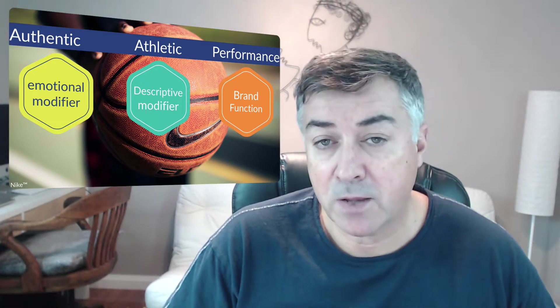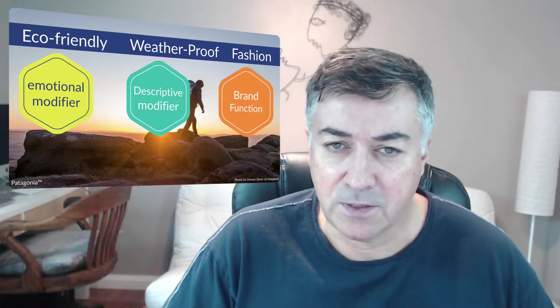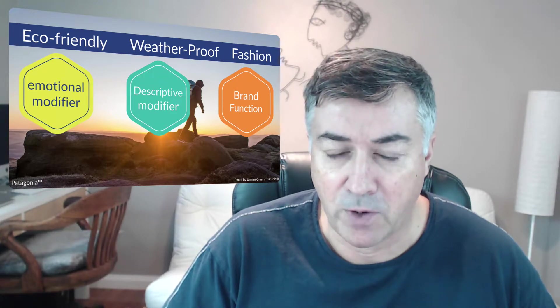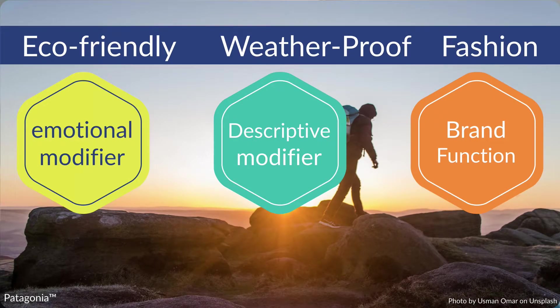Now let's see the brand mantra created by Patagonia. Patagonia is a company that sells outdoor outfits, mostly used by people who feel comfortable when they are uncomfortable — outside, when it's cold, rainy, snowy, or in the middle of nowhere. Patagonia created a very strong and effective brand mantra. The components are 'eco-friendly,' 'weatherproof,' and 'fashion.' Nothing about adventure, nothing about sport, nothing about outdoor activity — but all three words fit perfectly with their function.